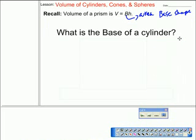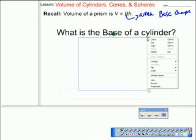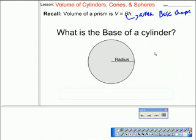What is the base of a cylinder? What is the shape? It's a circle. How would I find the area of that circle? Pi r squared, right? So since the area of a circle is pi r squared, and we find the volume by using the area of the base shape, somebody want to make a guess as to what the formula is for the volume of a cylinder?